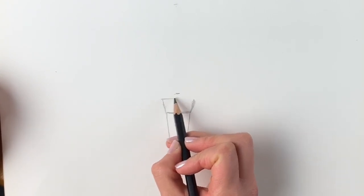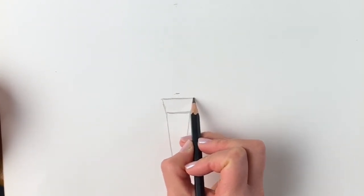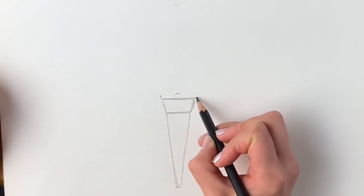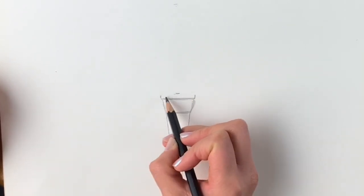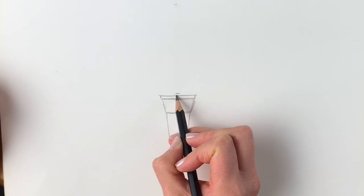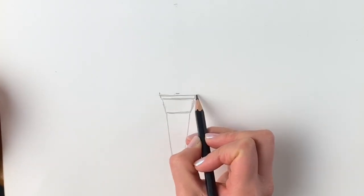It doesn't matter if you make any mistakes at the moment because we're going to erase these lines. Draw another layer of the cone coming up, and then we're getting to the top just like that.